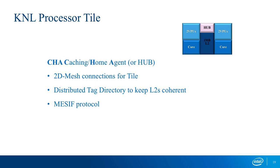The 'hub' is actually the Caching Home Agent. It takes care of talking to the rest of the system. It contains the distributed tag directory — information about which core has which cache line, distributed across the chip. It implements the MESIF protocol: Modified, Exclusive, Shared, Invalid, and F for Forwarding. Since there's no L3 cache, if a cache line is already on chip, we use the forwarding state to send it directly to the requester without writing back to memory first.